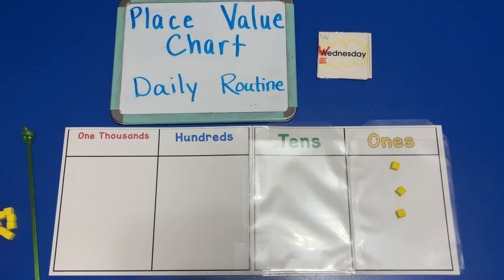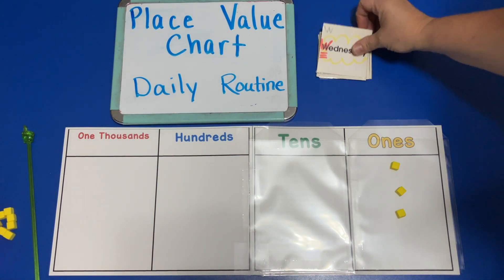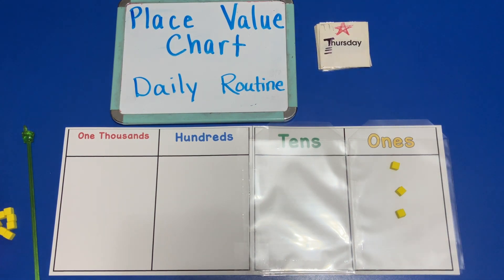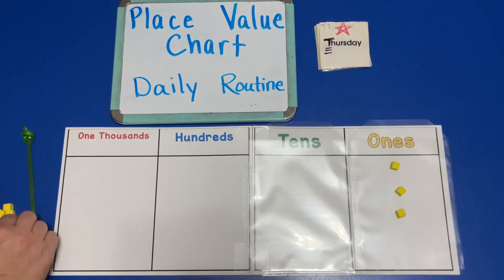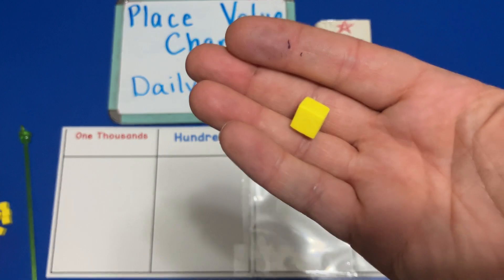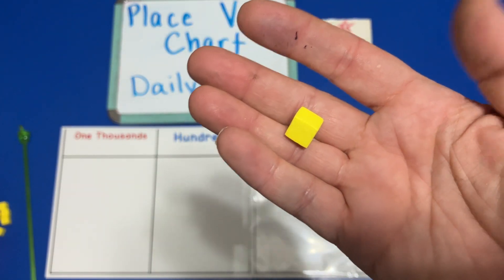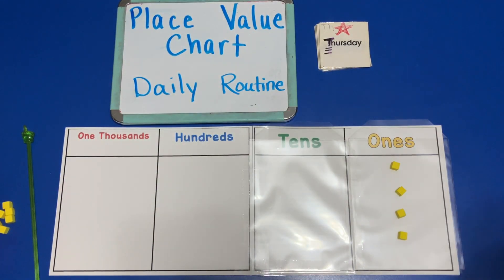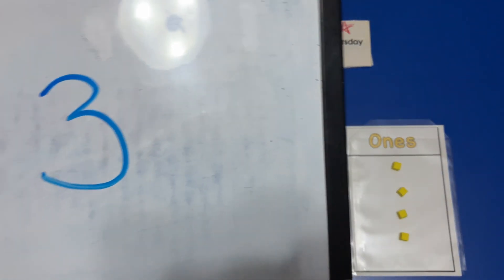And then it would be Thursday. On Thursday we would take this one unit and put it in the ones place on the place value chart.